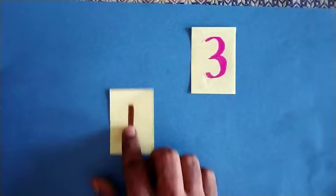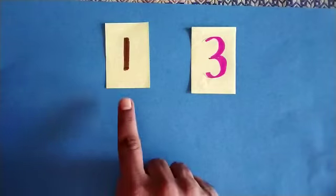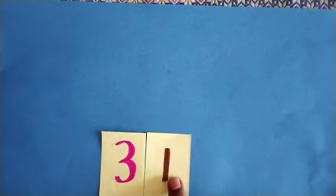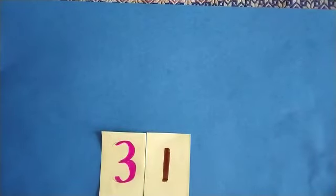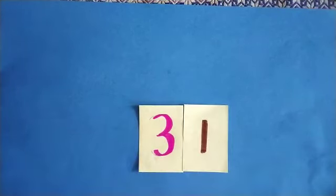Again we will take like this. Now this time what we will do? We will change the order. We will not take 1 first. We will take 3, and then we keep the 1 number card next to 3. Now you got this number. Now this number is 31. 31 means 3 tens and 1 unit.